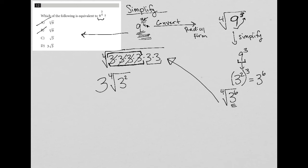The fact that I pulled a three out front tells me choice C can't be right because C doesn't have a three out in front. That leaves D as the correct answer, even though I don't yet fully see how the fourth root of three squared simplifies down to just square root of three.